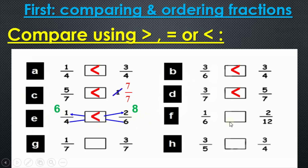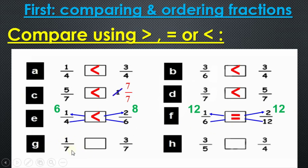Four times two equals eight. Six times one equals six. Which is greater — six or eight? Eight, of course! So one fourth is greater than two sixths. Question f: one over six or two over twelve. Both numerators and denominators are different. Using scissors: six times two equals twelve, and twelve times one equals twelve. They're both equal — bravo! Question g: one seventh or three sevenths. Denominators are equal, so three sevenths is bigger. Question h: three fifths or three quarters. Numerators are equal, so the smaller denominator wins — three fifths is bigger.